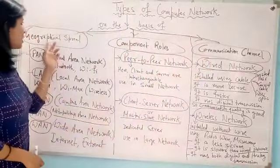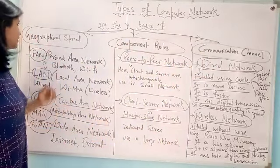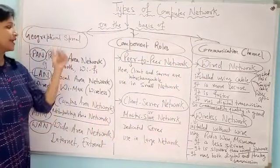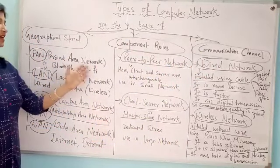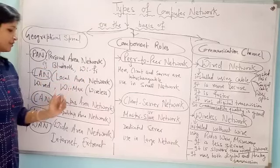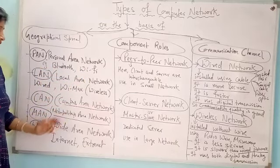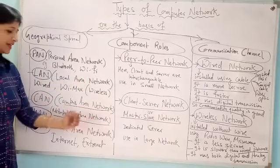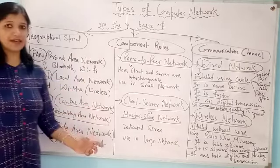On the basis of geographical spread, computer network can be personal area network, local area network, campus area network, metropolitan area network, and wide area network.